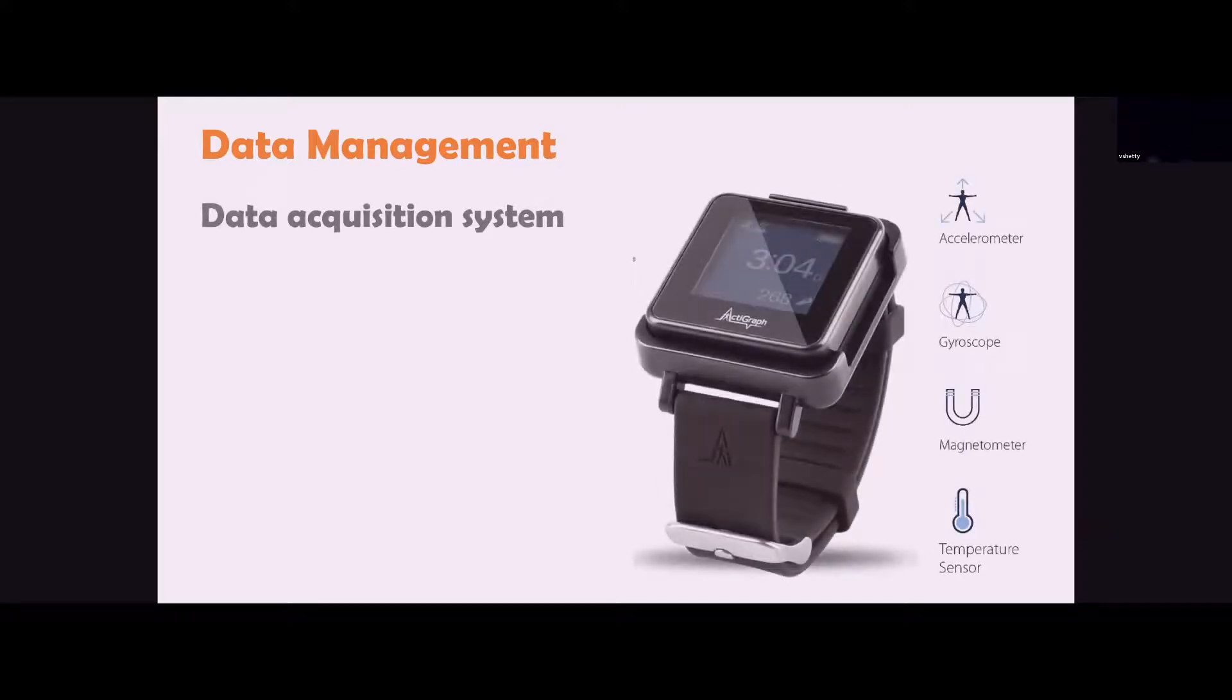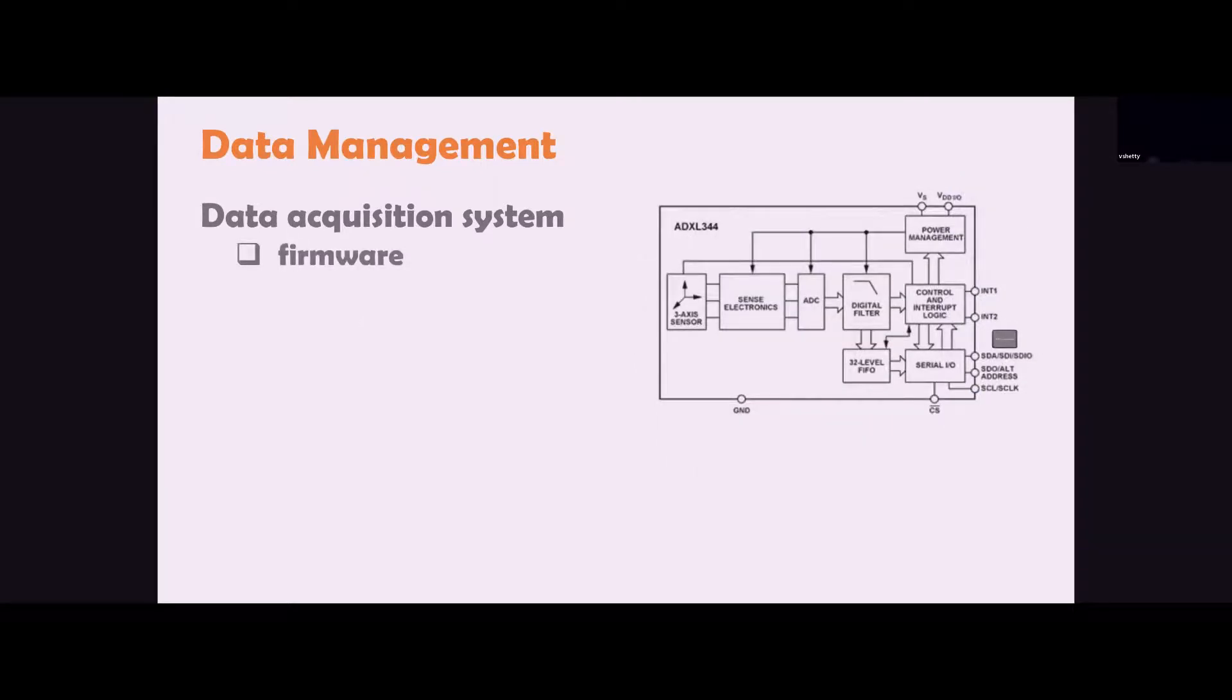Data management is another critical aspect you should be thinking about. For example, a common actigraph will embed things like an accelerometer, a gyroscope, a magnetometer, and a temperature sensor. Engineers usually use a combination of firmware and hardware and software to do the data management. Firmware usually controls basic device functions such as the configuration of data, logic programming, communications between and within hardware components using machine learning commands. In a sensing module like this, you can quickly see it will have a sense electronics module to sense the motion captured by the three-axis accelerometer, and then it amplifies the signal and conditions it.